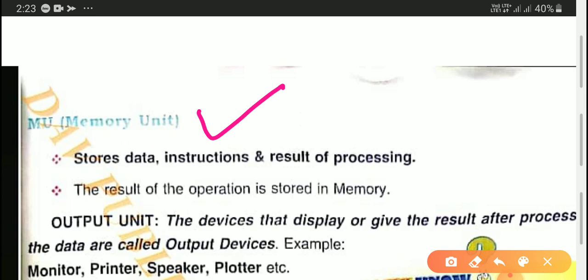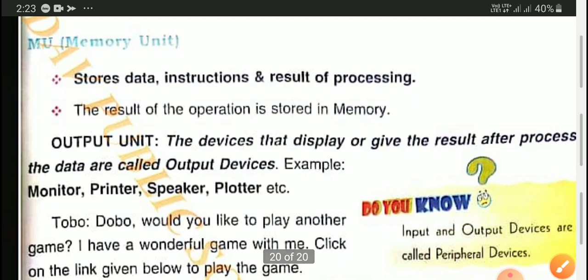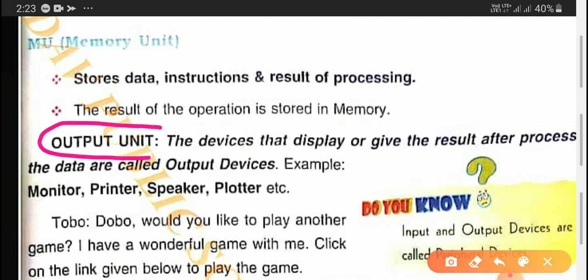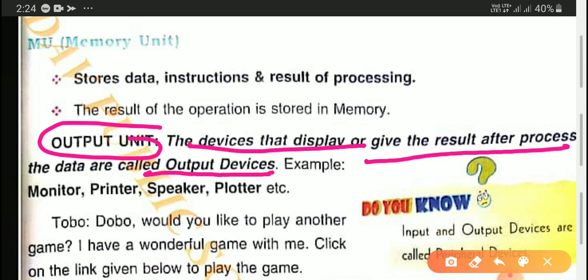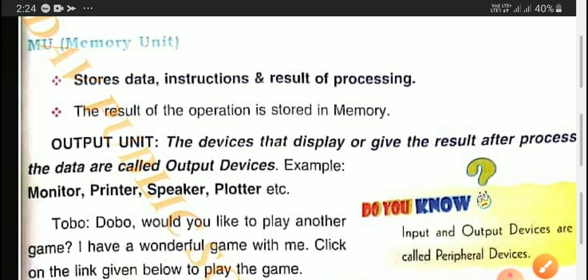The third part of CPU organization is the output unit. Output unit devices display or give the results after processing — we call them output devices. If you have added some data and a calculation is done, you can see that answer on the monitor or print it with a printer. Speakers are also a type of output device. Like this, we can see all the output devices here.